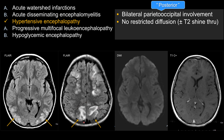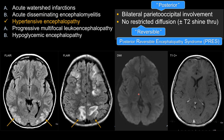Hypertensive encephalopathy preferentially affects the posterior aspect of the cerebrum, so there is a posterior distribution. Because there is no restricted diffusion, this process seems to be reversible — the patient would recover without neurologic sequelae. Because of that, this is also known as Posterior Reversible Encephalopathy Syndrome, or PRES.